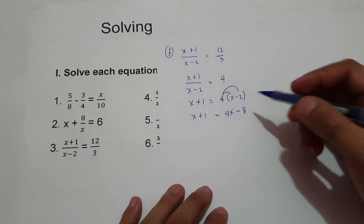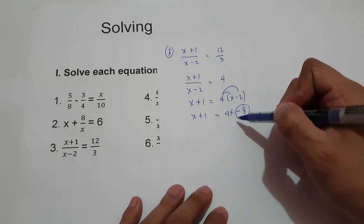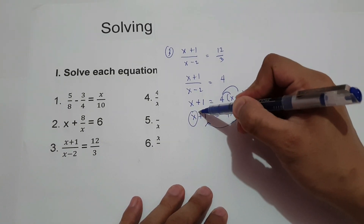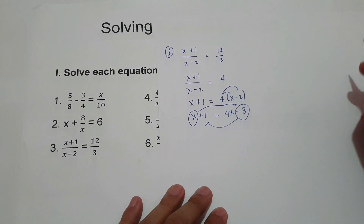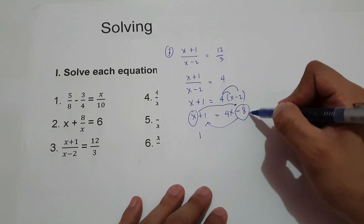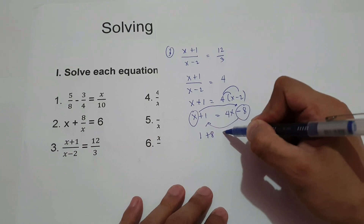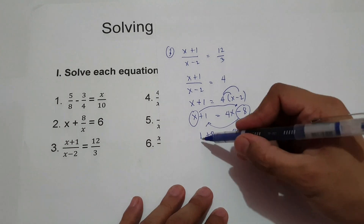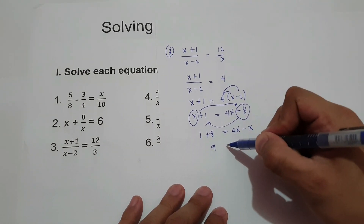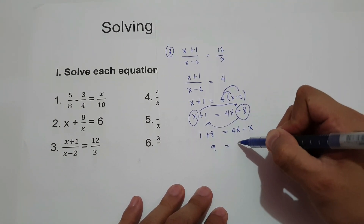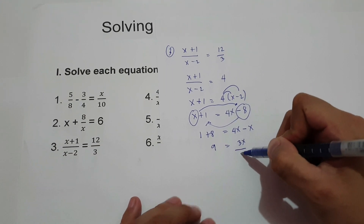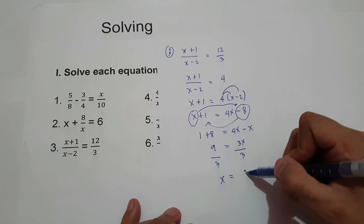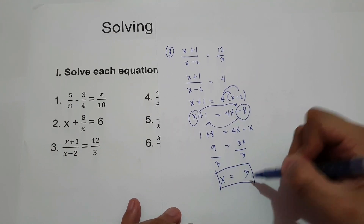To simplify, move negative 8 to the side of x plus 1 and move x to the side of 4x, changing signs. So 1 minus negative 8 becomes positive 8, and 4x minus x is 3x. Therefore, 1 plus 8 is 9 equals 3x. Divide both sides by 3, so x is 9 divided by 3, which is 3. The value of x is 3.